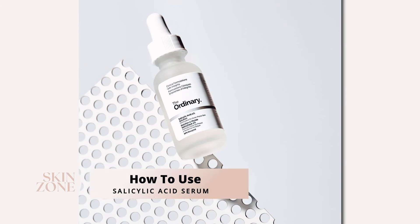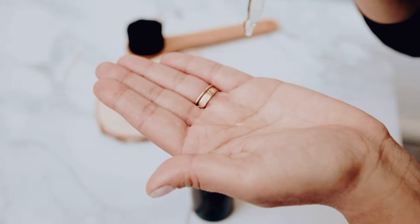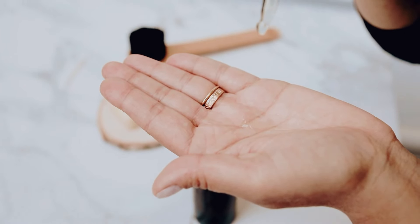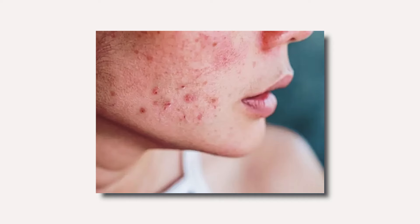How to use the salicylic acid serum? We recommend applying this serum two times per week, in the morning or evening, avoiding the eye contour area. It is a water-based serum so it needs to be applied prior to oils and creams, but after cleansing and toning. It needs to be applied to dry skin, as water will deactivate the acid from working properly. Apply two drops into the palm of your hands and apply to your skin, or use the serum as a spot treatment and apply only to your blemishes.